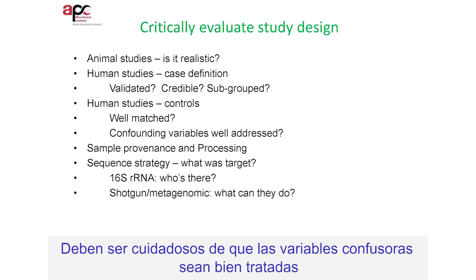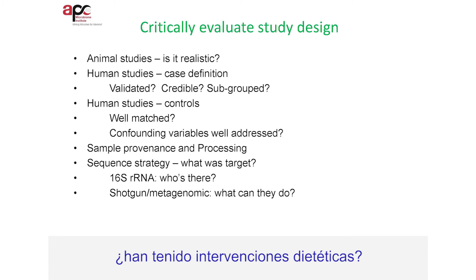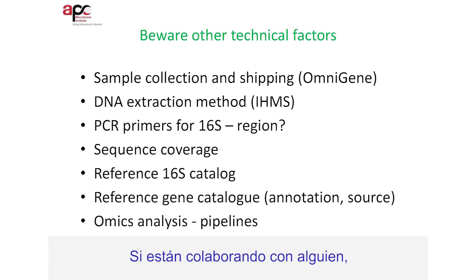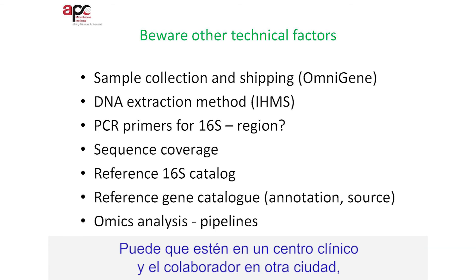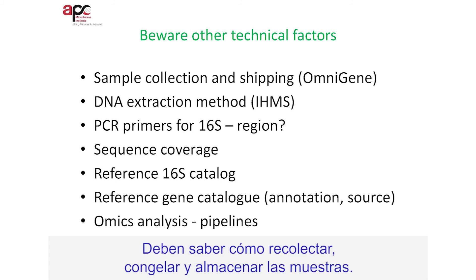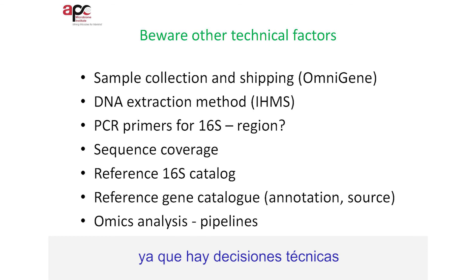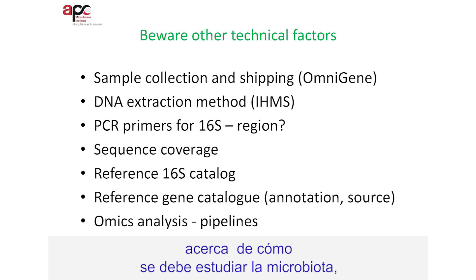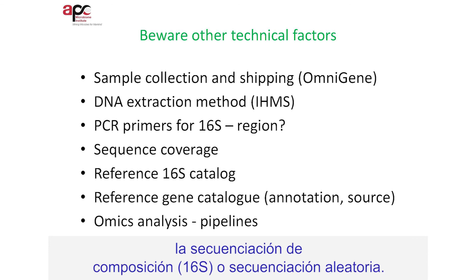You have to be careful about confounding variables and whether or not they're addressed. If they're IBS patients, have they been taking dietary interventions? If you're collaborating with somebody, you may want to either receive samples for microbiota analysis or send samples to another city. You have to know how samples should be collected, frozen, and stored. You should consult with an expert before you do these studies because there are technical decisions about whether you can afford to do compositional sequencing or shotgun sequencing.